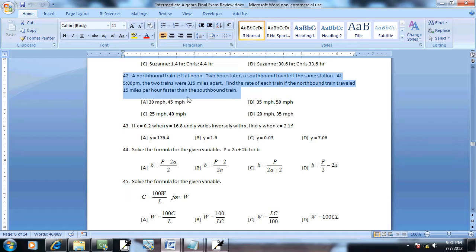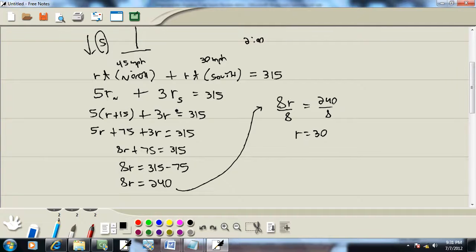So let's see what in the world they're even asking for. Find the rate of northbound. Find the rate of each train. That's nice, doesn't say which is which.